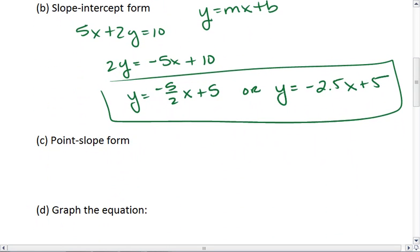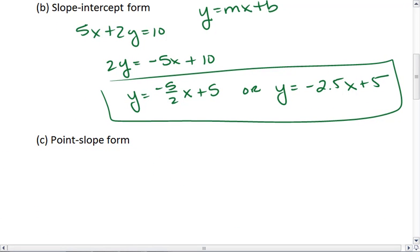And then lastly, we want point-slope form. For this, we want a point and we want the slope. Well, from my slope-intercept form, I already know that my slope is negative 5 halves or negative 2.5.